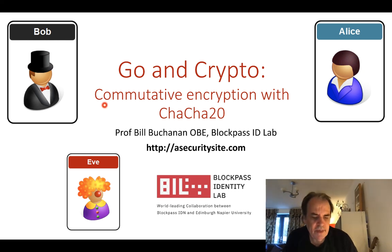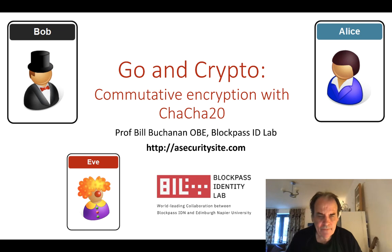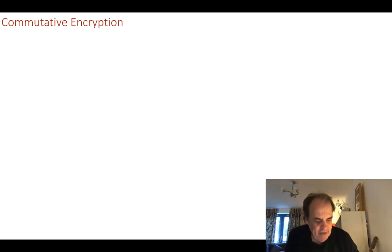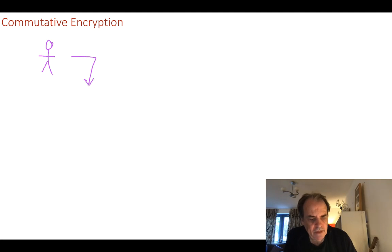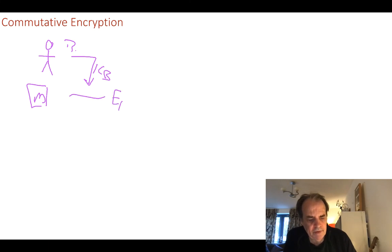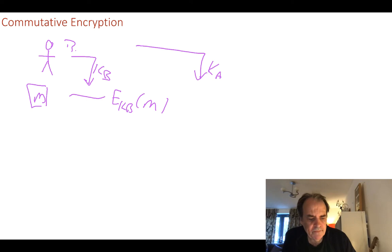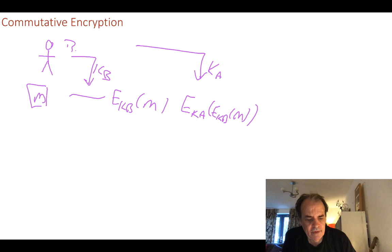Let's look at how we can use commutative encryption using a stream cipher such as ChaCha20. Commutative encryption is a method where we take a key — say Bob's key — and we take our message and encrypt with Bob's key (KB). We then take Alice's key (KA) and encrypt again. If we use something like AES, we have to reverse it back.